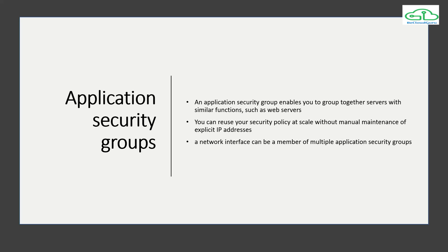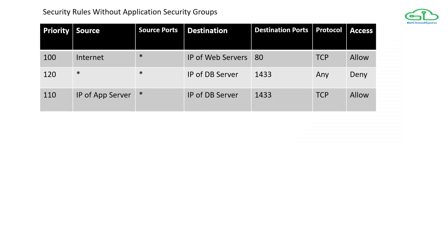When you attach or associate a network interface with an application security group, that NIC can be a member of multiple application security groups. Now let's see what problem application security groups solve. Looking at a snapshot of network security group rules without application security groups: if I need to allow traffic from the internet to a web server, I need to put the web server's IP address and other information into the rule.